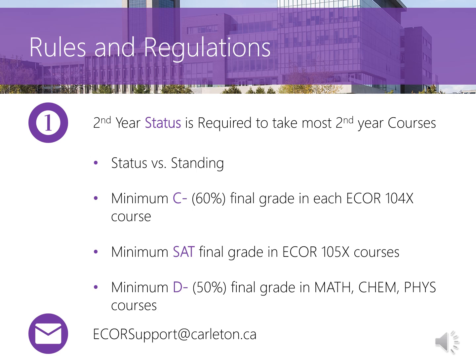In order to register in second year engineering courses, you will need to achieve second year status in engineering — which should not be confused with second year standing. Second year status in engineering requires that you earn a C grade (60% or higher) in all ECOR 1040x courses, a SAT grade in all ECOR 1050x courses, and a D- or 50% grade or higher in all required math, physics, and chemistry courses. If you are unsure whether you are on the path to second year status, contact our first-year support team at ecorsupport.carleton.ca for assistance.